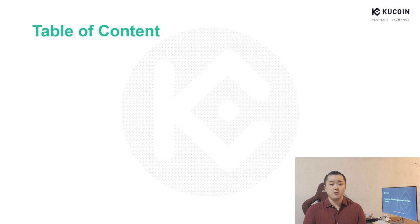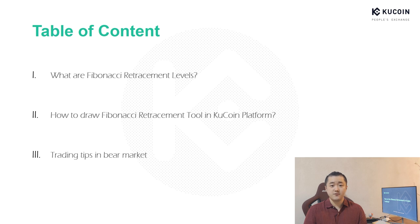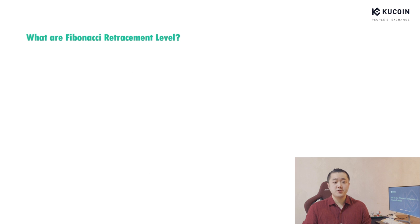As usual, let's first take a look at the table of content of today's video. We will talk about 3 topics. The first one is about Fibonacci Retracement levels, which we have discussed before. In this session, I will give you 4 detailed levels to complete your understanding of Fibonacci Retracement levels. Then we will use our KuCoin trading platform to draw the Fibonacci Retracement levels, and I prepared several examples to strengthen your memory so you can instantaneously use it during your crypto trading. In addition, I will provide some trading tips for you when you encounter a bear market.